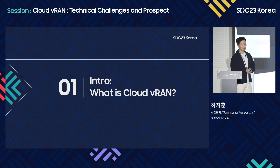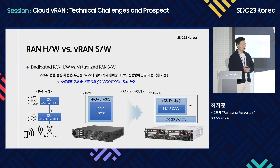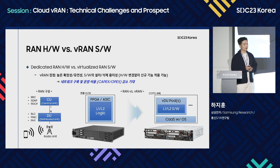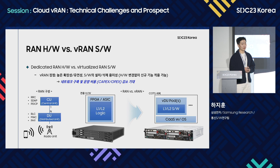클라우드 vRAN이란 무엇인가에 대한 내용입니다. 우선 기존의 RAN 하드웨어와 vRAN 소프트웨어 두 가지를 비교하는 것이 첫 번째일 것 같습니다. 전통적으로 기지국은 FPGA나 ASIC과 같은 전용 하드웨어를 바탕으로 해서 굉장히 빠른 퍼포먼스와 낮은 비용으로 L1과 L2, PHY·MAC 계층을 높은 성능으로 구현하는 것이 가장 주요했습니다. 이 L1, L2 로직 자체를 소프트웨어로 구현한다는 것은 굉장히 어려운 것으로 당연시 되었던 시절이 있었습니다.